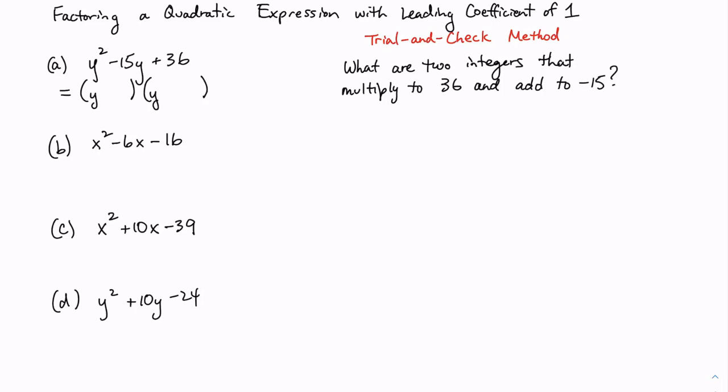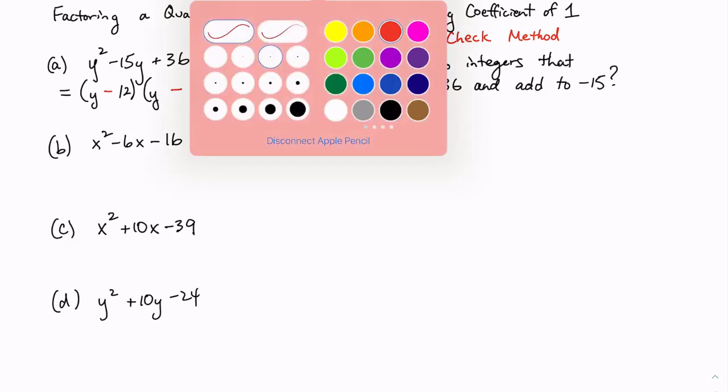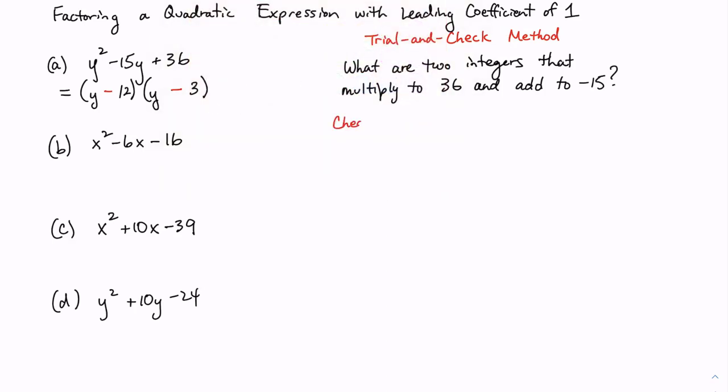So why don't we try 12 and 3? 12 times 3 gets me 36. But is it positive 12? Is it positive 3? Turns out it's got to be negative 12 and negative 3. Now this procedure is never over until you actually check your factors.